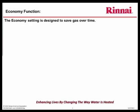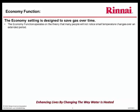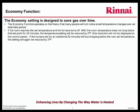The economy setting is designed to save gas over time. The economy function operates on the theory that many people will not notice small temperature changes over an extended period of time. If the room reaches the set temperature and the furnace turns off, and the room temperature does not drop below the set temperature for 30 minutes, the temperature setting will be reduced by 2 degrees Fahrenheit. This reduction will not be displayed on the control panel. If the furnace sits for an additional 30 minutes without dropping below the new set temperature, the setting will again be reduced by 2 degrees Fahrenheit. The maximum temperature reduction will not exceed 4 degrees Fahrenheit.